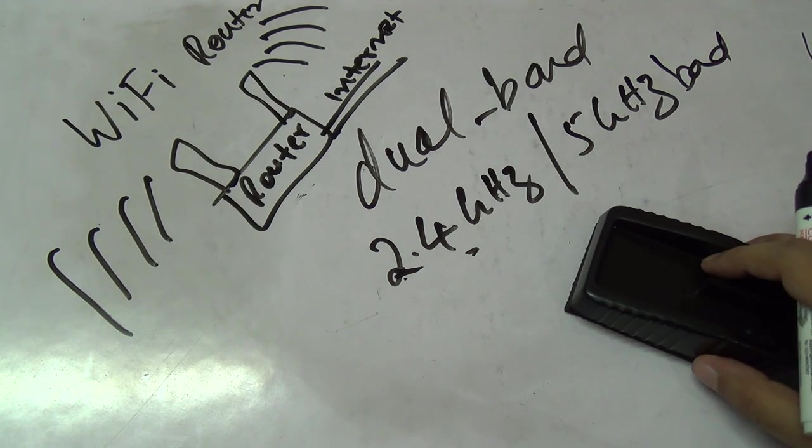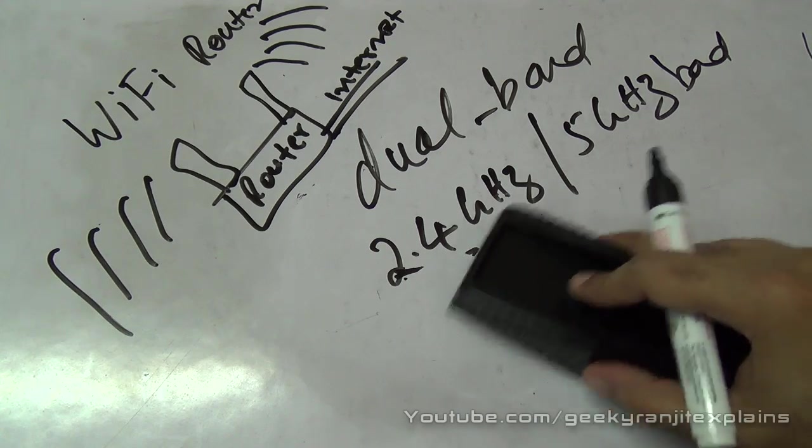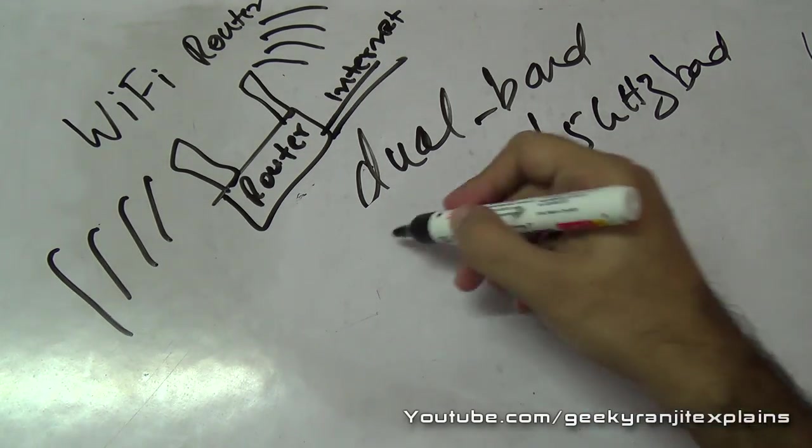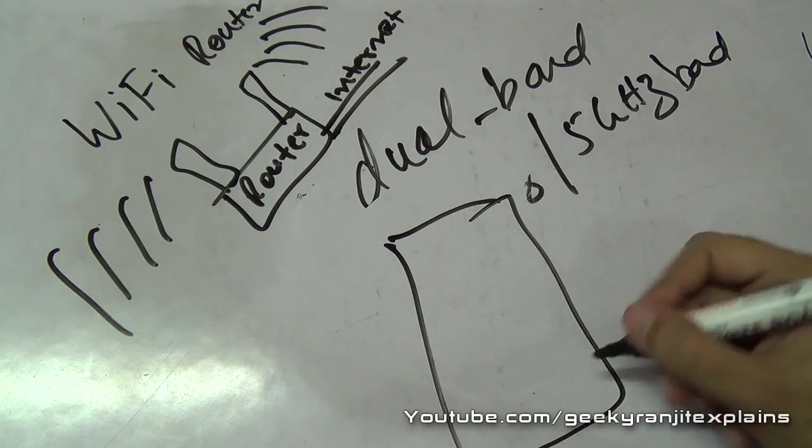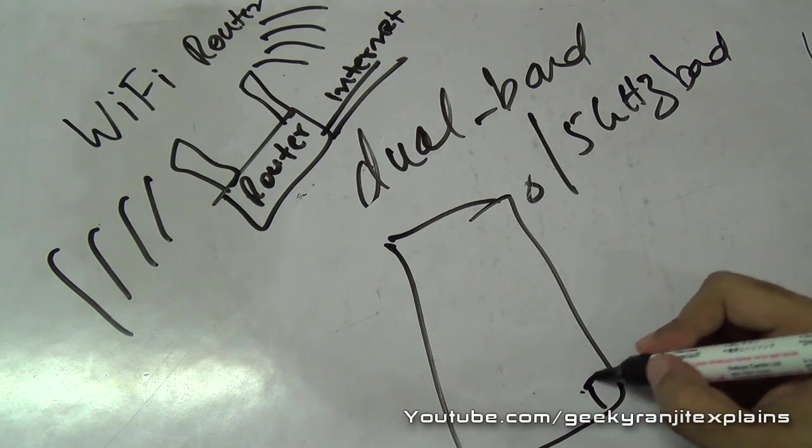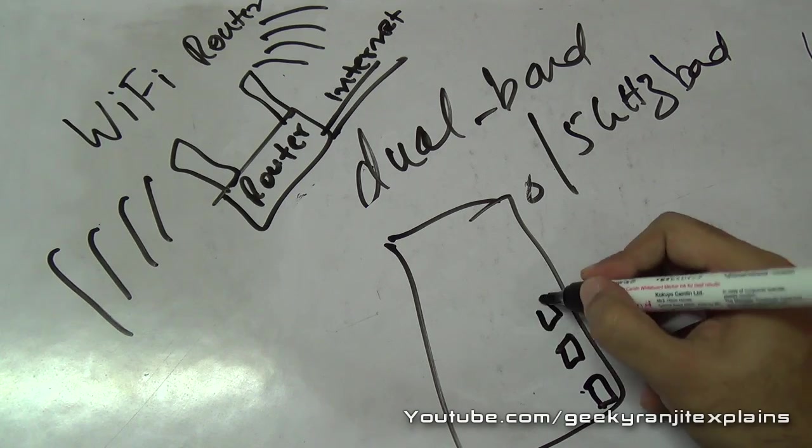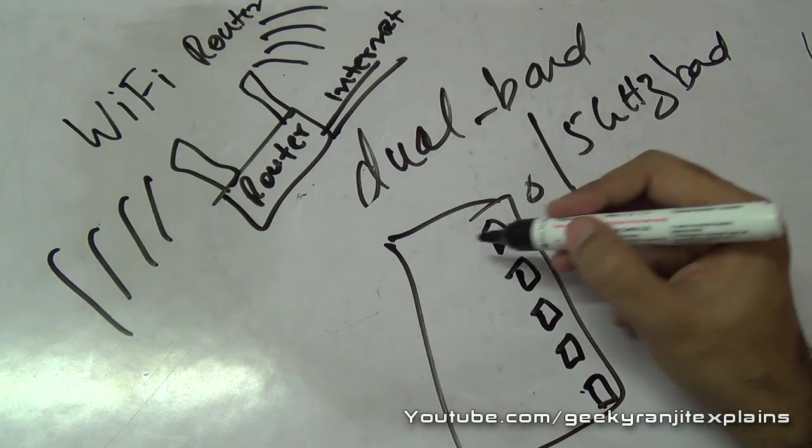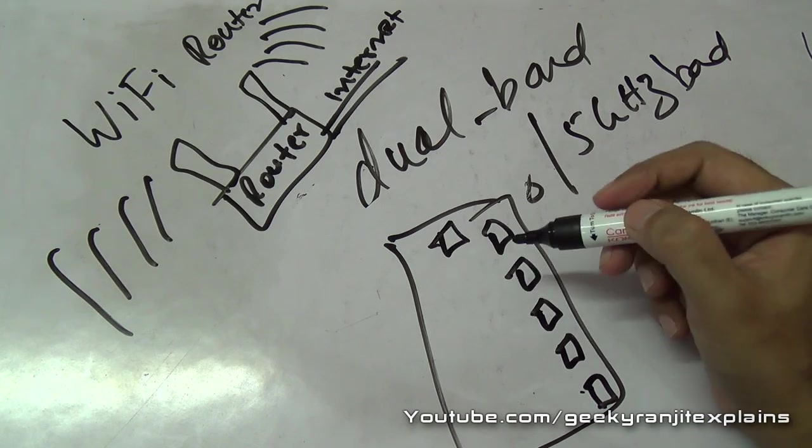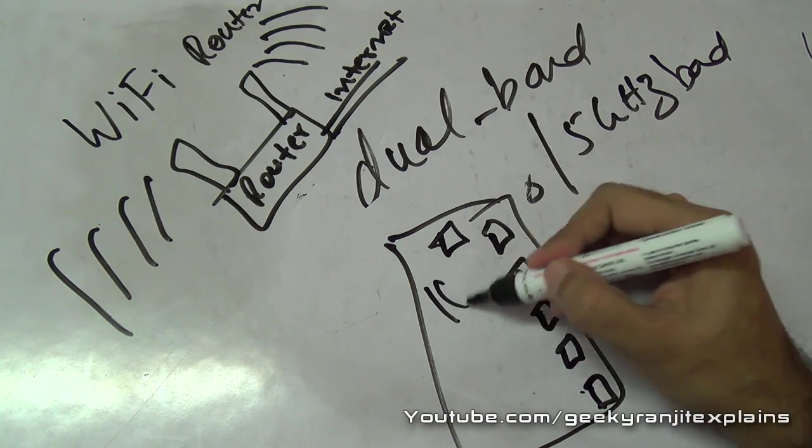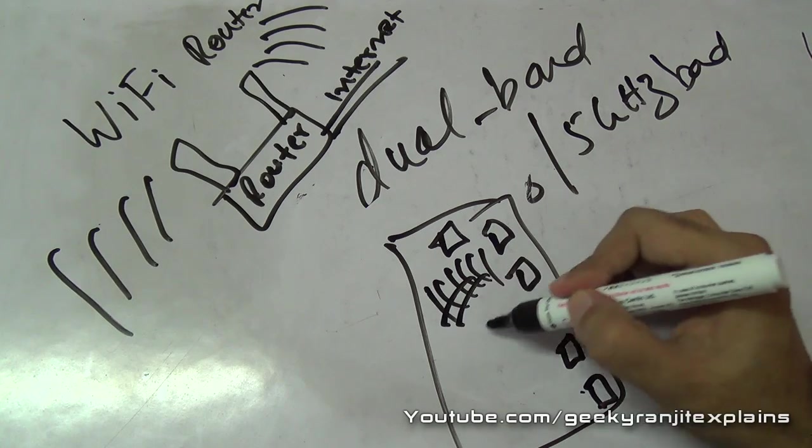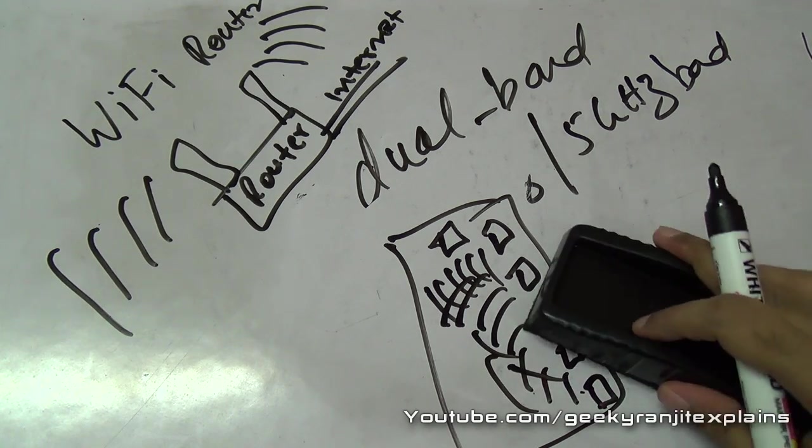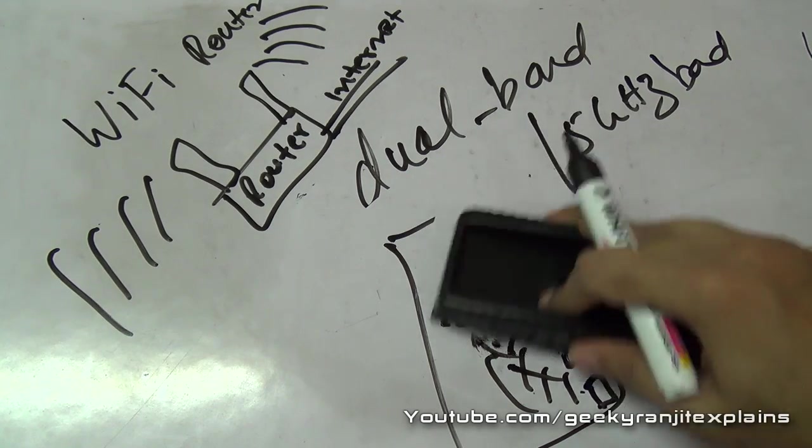The main problem with 2.4 gigahertz, particularly if you're living in a very crowded area or in a building, is that you might have a lot of wireless routers. For example, if this is your building, you might have so many Wi-Fi routers in this building. Every household these days has a Wi-Fi router if they have a computer.